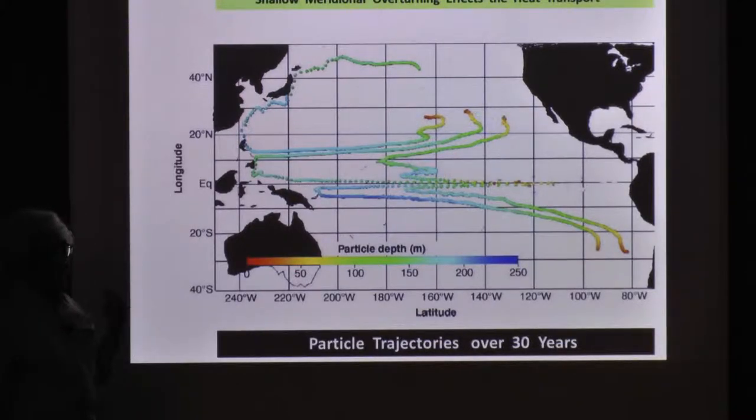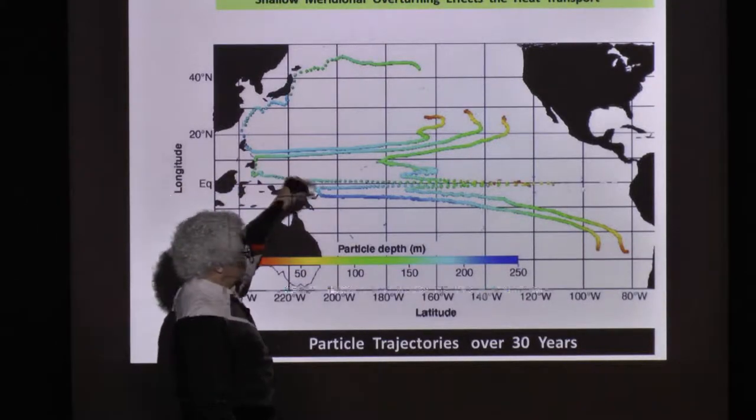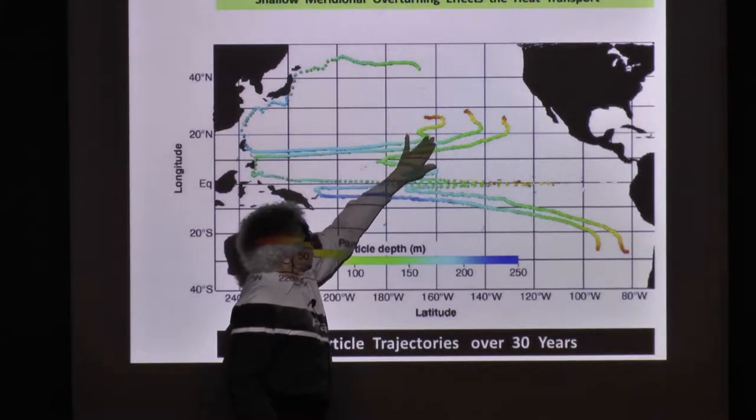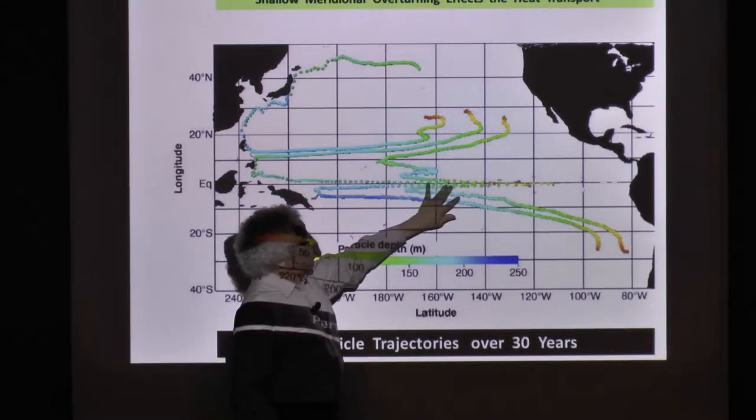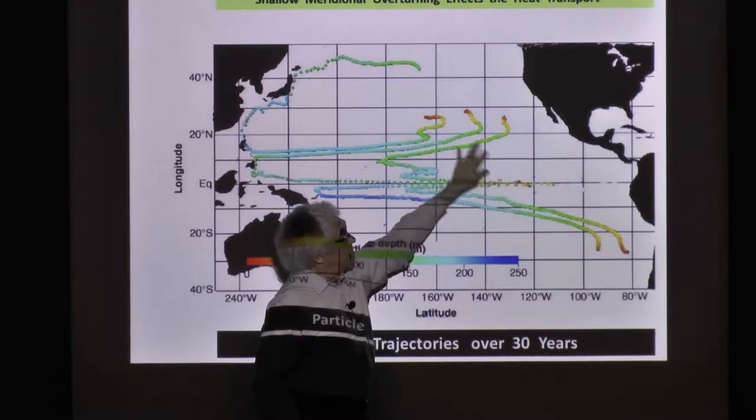Then the whole thing about ventilated thermocline is to give it a third dimension. It's not just that, it's also down and up. So the water that's at the surface here sinks, some of it ends up in the equator, comes back up, gets warm, flow north.